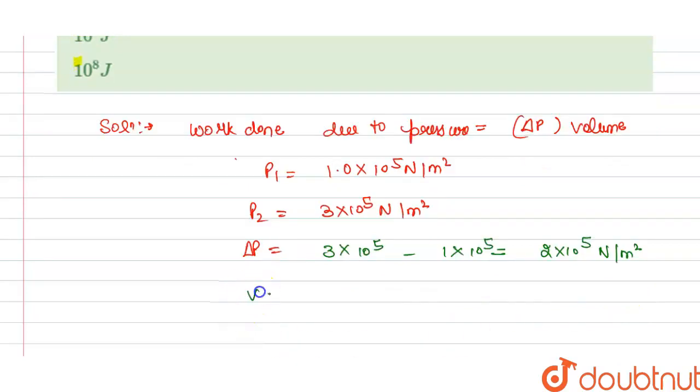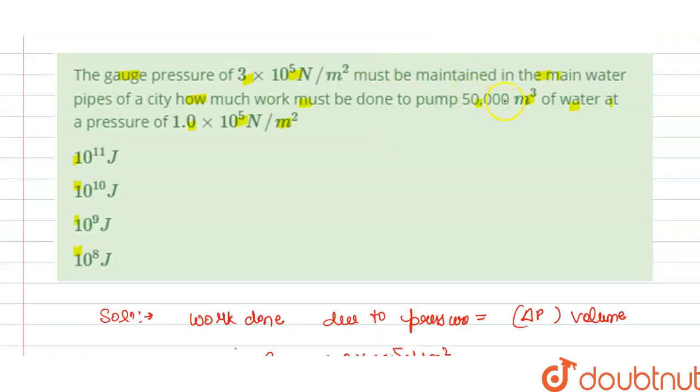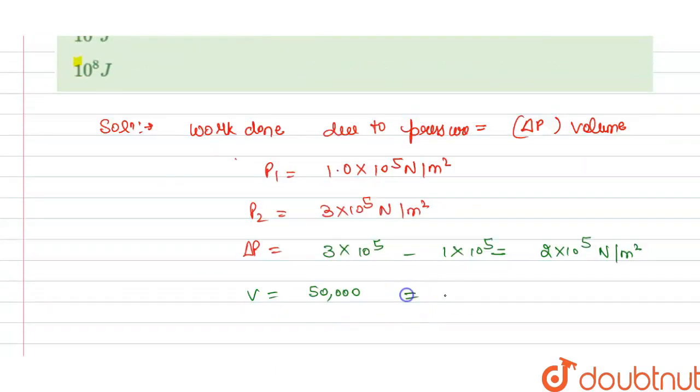And we have the volume V equals 50,000. This is 1, 2, 3, 4 zeros here, so we can write this as 5×10^4 m³.